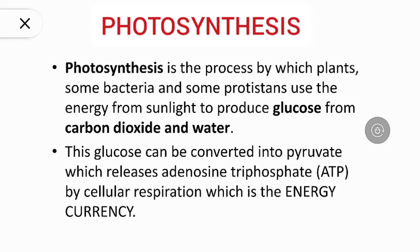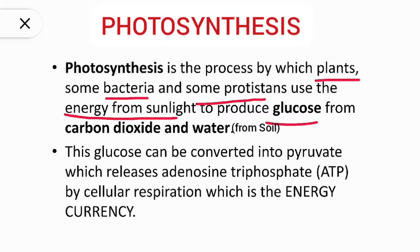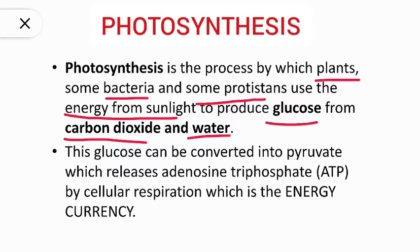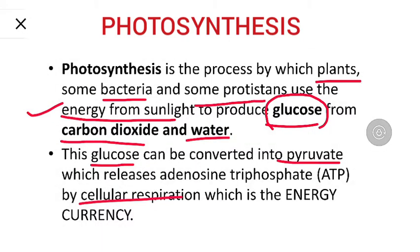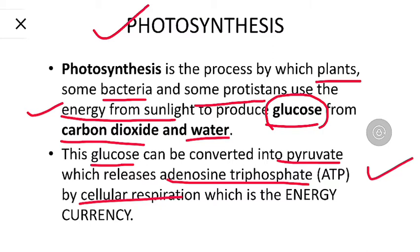We all know what photosynthesis is from school days. Photosynthesis is the process by which plants, some bacteria, and some protists use energy from sunlight to produce glucose. Carbon dioxide and water present in the atmosphere are combined chemically using sunlight energy to produce glucose. Cellular respiration then takes place, converting glucose into pyruvate and releasing ATP — adenosine triphosphate — the energy currency of any cell.